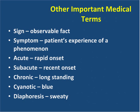There are a number of important medical terms you'll need to know. A sign is an observable, objective finding that you can sense with your senses or a device — it is not subjective. A symptom is a patient's experience of a phenomenon; you can't see or measure it — it's what a patient describes to you. Something that is acute has a rapid onset. Subacute started recently but not immediately preceding the event. Chronic is something long-standing. Someone who is cyanotic has blue lips or fingers — not enough oxygen in their bloodstream. And someone who is diaphoretic is sweaty.